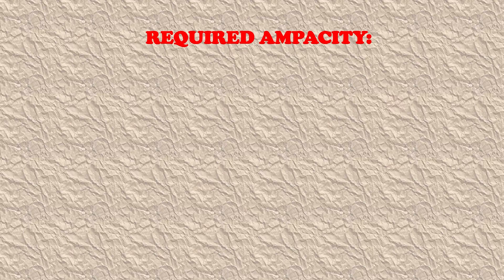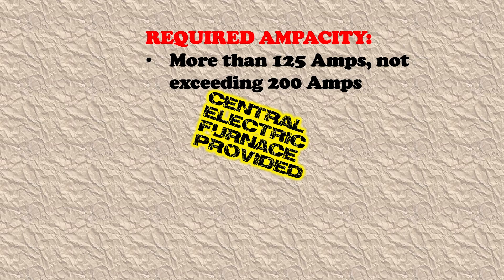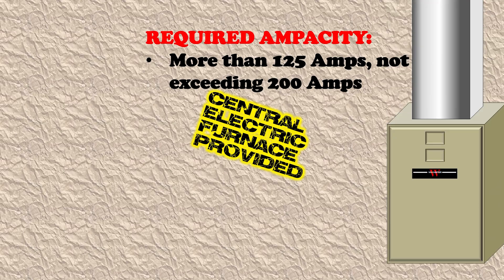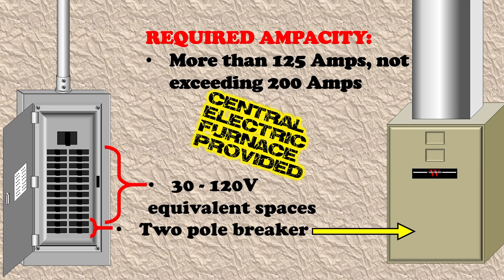In our next example, we're now more than 125 amps but not exceeding 200 amps inclusive, and a central electric furnace is provided. Because our central electric furnace is provided, we are again only required to have 30 of those 120-volt equivalent single pole spaces. The idea being that this furnace only takes up two of those panel spaces in the breaker.